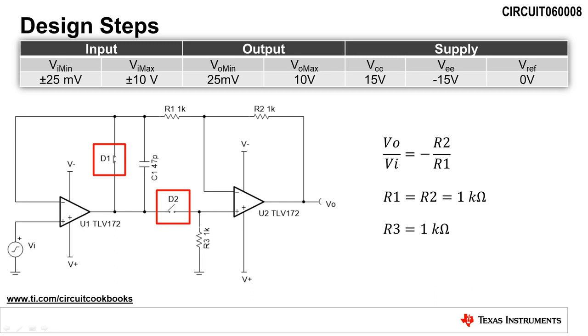For this circuit, we will select standard 1 kiloohm resistors for R1 and R2. A resistor R3 is placed from the non-inverting input of U2 to ground to ensure that U2 has a valid input when D2 is reverse biased. The value of R3 is also set to 1 kiloohm.